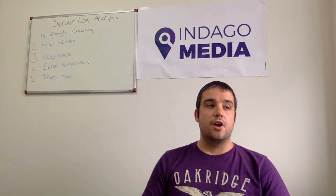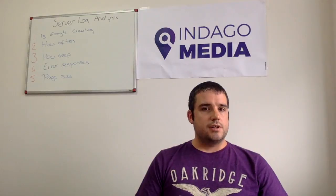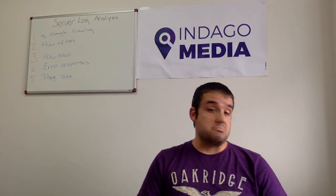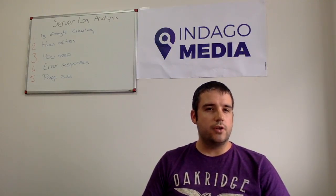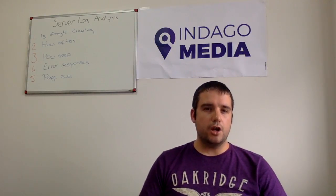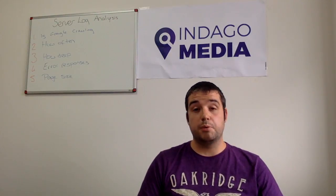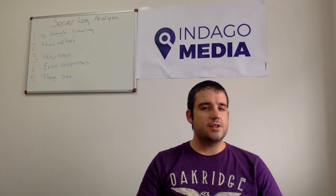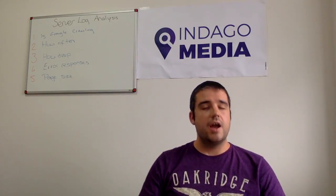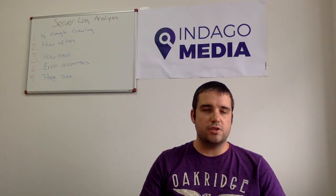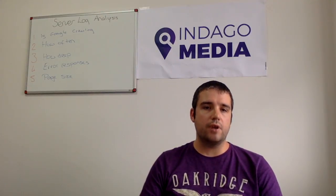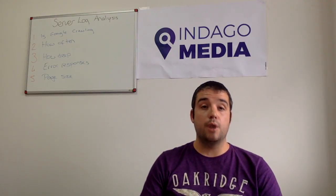And finally, page size — especially for mobile. The third biggest ranking factor coming out in September 2016 is going to be mobile page speed, so page size plays a huge role in this. If you can identify large page sizes — and this is simple if you download a log file into Excel and just do a quick filter, sort by largest to smallest — you'll see your biggest pages. Then you can start working on why these pages are so much bigger than the others. It can be simple things like large images that you've not looked into. Quick filter, sort it, and you can find out your largest pages and fix them.